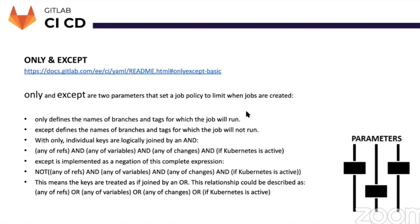The last point before we move to the demo: there are two special keywords that allow you to add great flexibility in your GitLab CI/CD pipelines. This feature is specific to GitLab at the syntax level, though other providers offer similar flexibilities via other means. The keyword 'only' defines the names of branches and tags for which the job will run, and 'except' defines the names of branches and tags for which the job will not run.